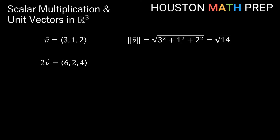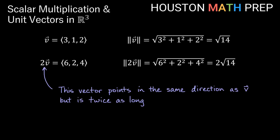If we look at the magnitude of 2 times vector v — the vector 6, 2, 4 — we do the same calculation: the square root of 6 squared plus 2 squared plus 4 squared. We get the square root of 56, which reduces to 2 times the square root of 14. So we get double the length when we multiplied by a scalar of 2. What scalar multiplication does is give us a vector that is parallel to the original — it's just scaling the length. Multiplication by 2 gave us a vector twice as long, pointing in the same direction as v.